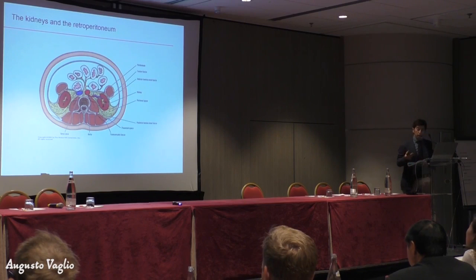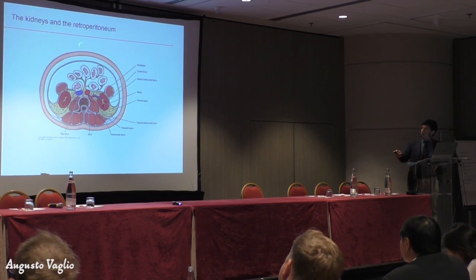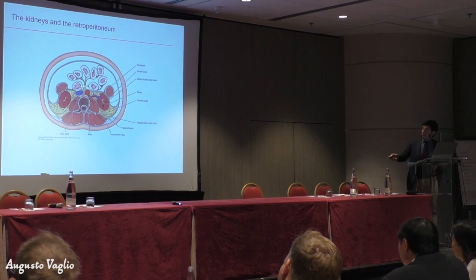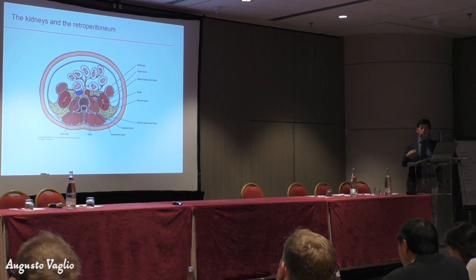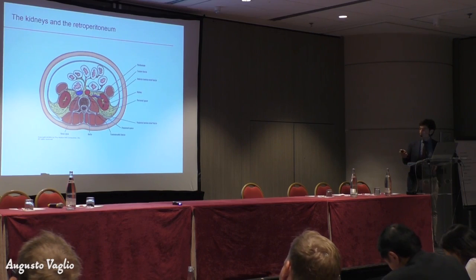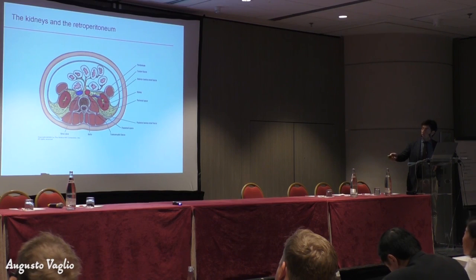If you make a cut — which is called an axial view in imaging studies — this is the interior part of your abdomen and this is your spine. This part here is called the retroperitoneum, and I want to clarify what the retroperitoneum is, because we often talk about retroperitoneal fibrosis or retroperitoneal infiltration in patients with ECD. The retroperitoneum is that anatomical part of the abdomen which is just behind the peritoneum and where the kidneys and other structures are located.